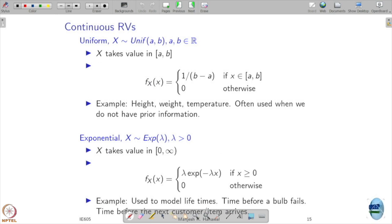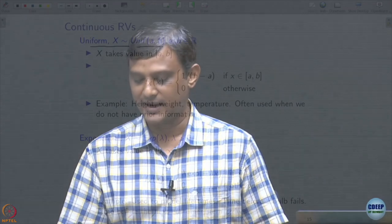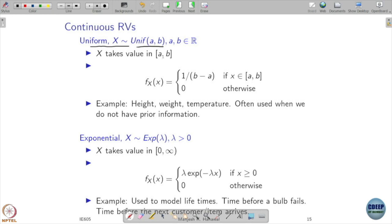The definition of a continuous random variable is that the range over which the random variable takes values is uncountable. The first example is called the Uniform distribution. It comes with two parameters and is denoted as Uniform(a, b), where a and b are real numbers. The random variable X takes values in the interval a to b. The associated probability density function is defined as 1/(b−a) in the range [a, b].